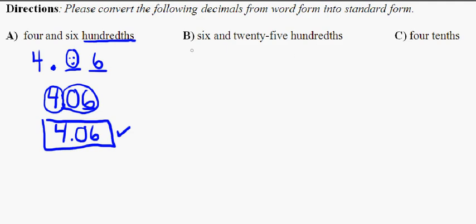Next up, six and, oh, there's our 'and' again. So I've got to put my decimal point right beneath that. Six and 25, hundredths again. Okay, I just remembered we did hundredths. That's two blocks out.